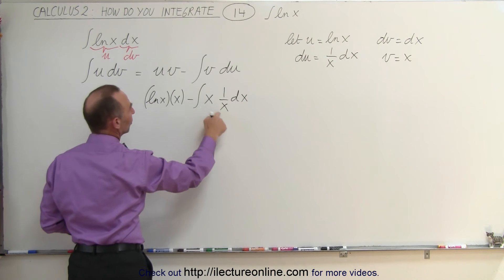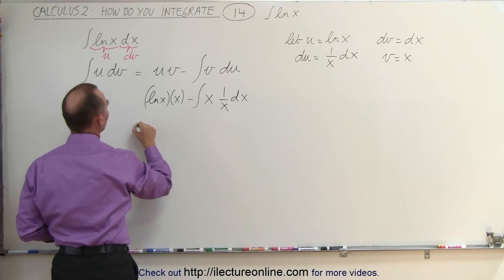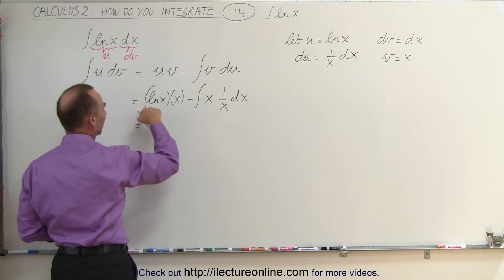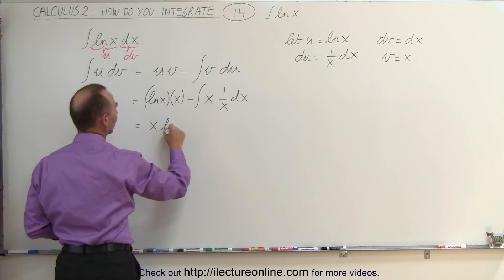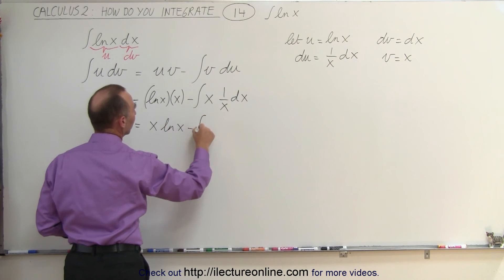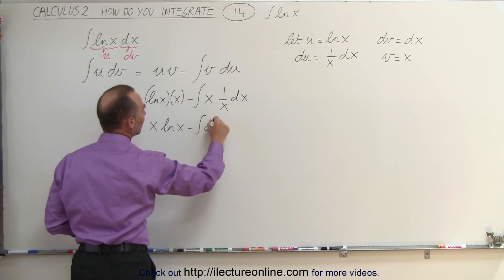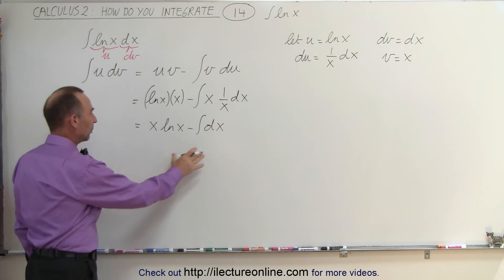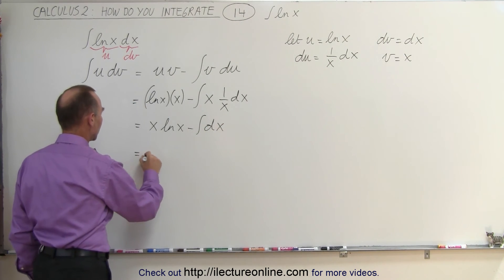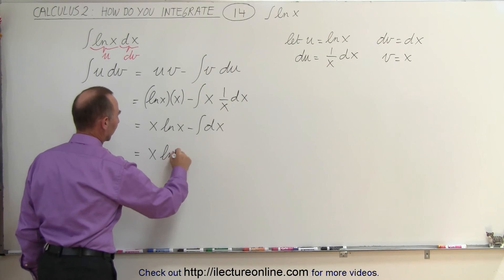Now you can see that the x's will cancel out, so this becomes x times the natural log of x minus the integral of dx. Then when we integrate this, we get x times the natural log of x minus x plus a constant of integration.